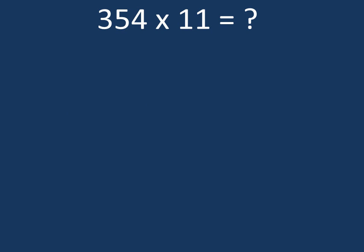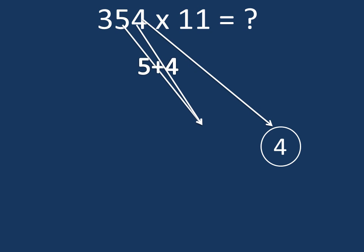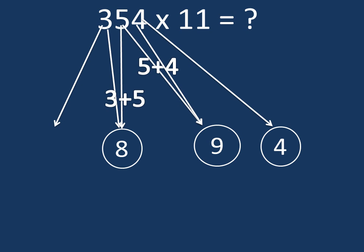It is time for a 3-digit number. 4 will be on the right side. Add 5 and 4: 9. Put it left to 4. Add 3 plus 5: it is 8. Put it left of 9. Then the first digit is 3. Put it in extreme left. So the result is 3, 8, 9, 4.